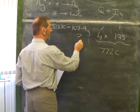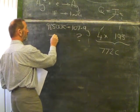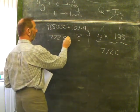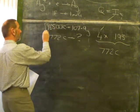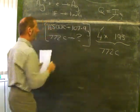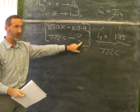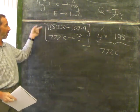Well, if this amount of electricity gives 107.9 grams of silver, how much silver would be produced from just 772 coulombs? This is going to be a much smaller quantity of silver because it's a much smaller quantity of electricity.